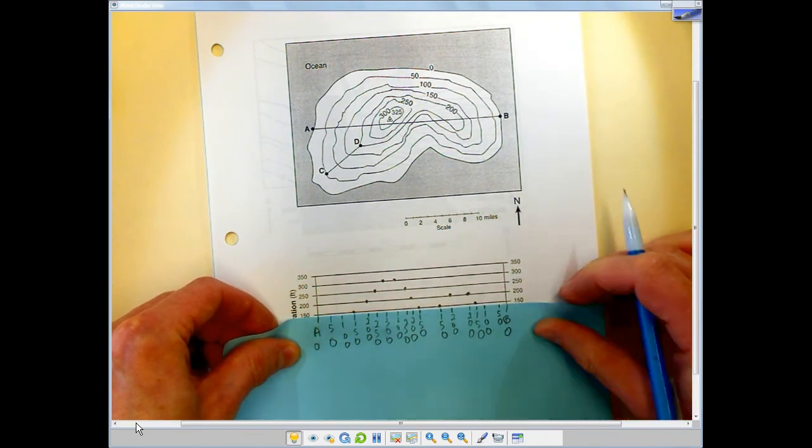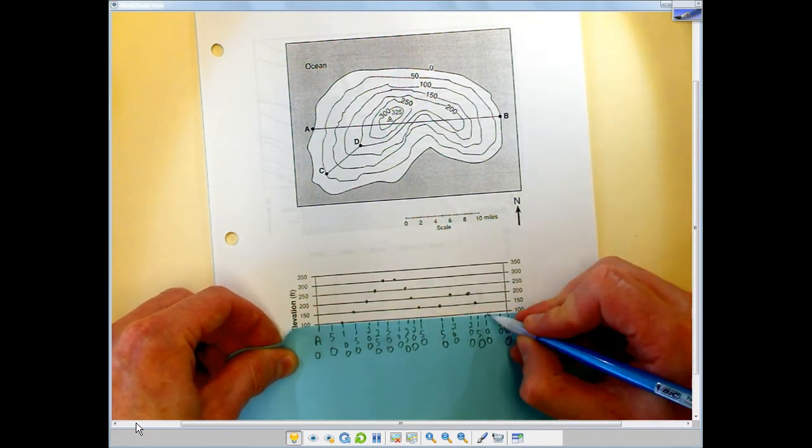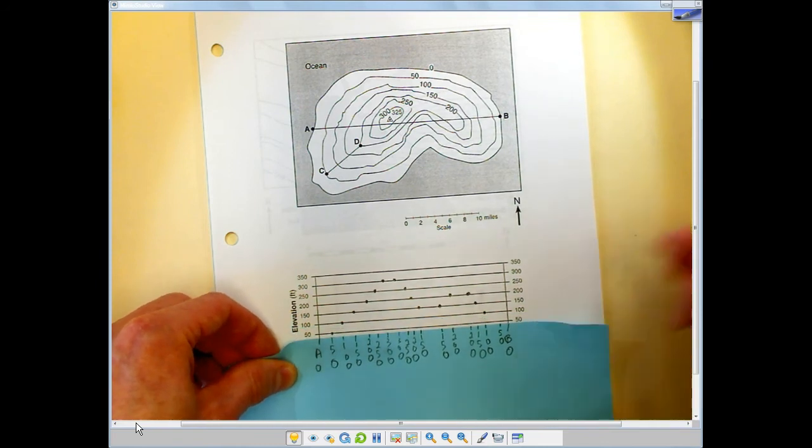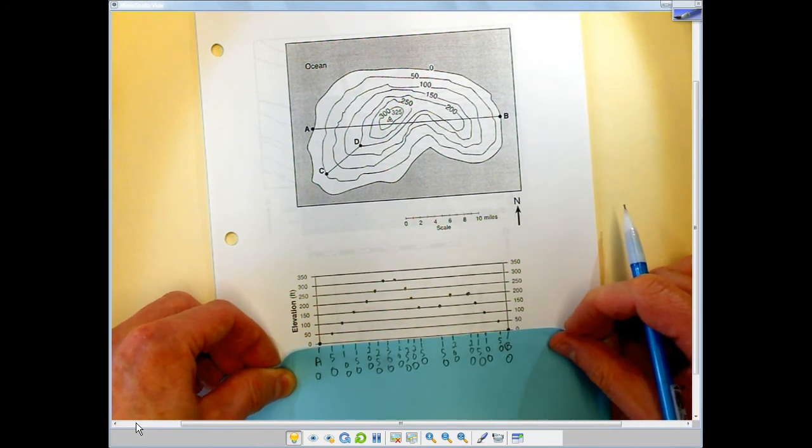And anytime I make a mistake, I just kind of get off the paper and realign it with that A. And now I bring this down to 50. And just to double check, my B is at zero. Everything is good with the world.